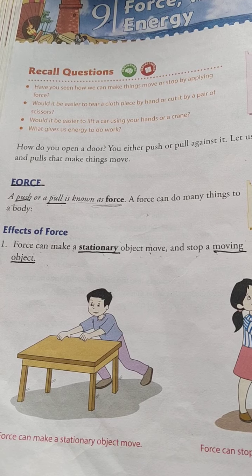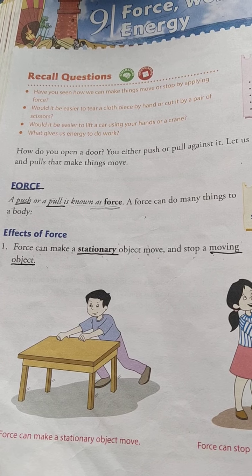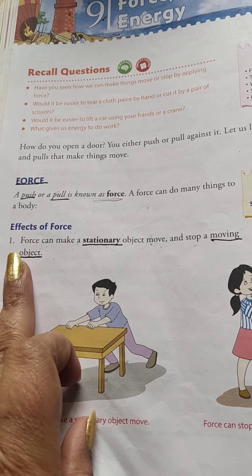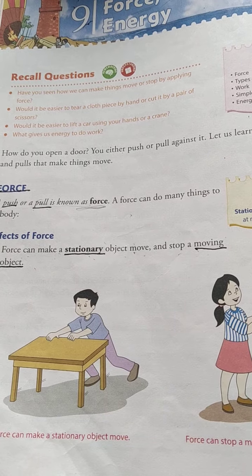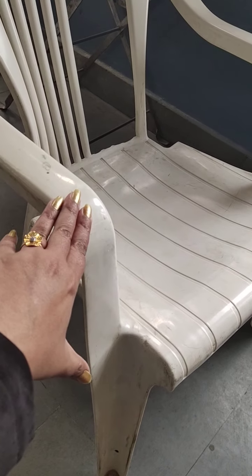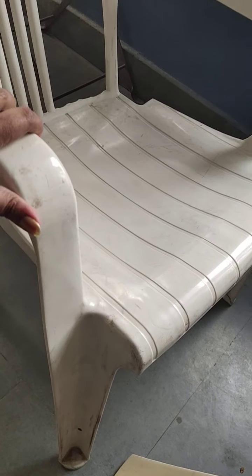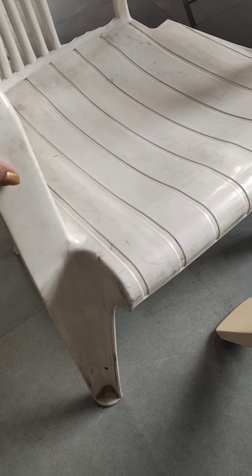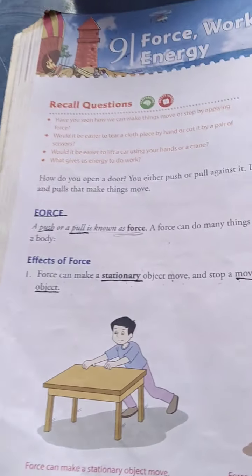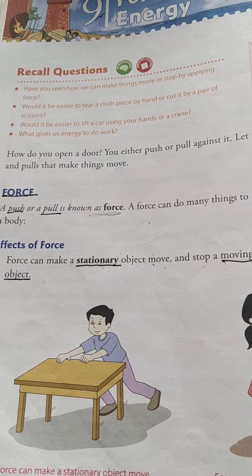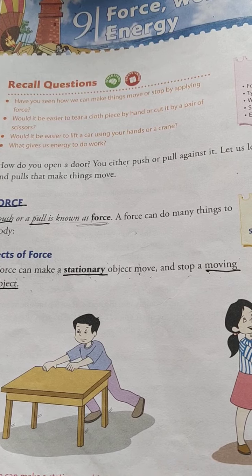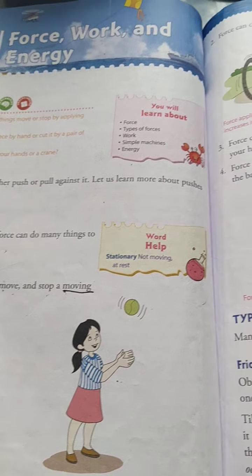This force is very powerful and it can do many things to a body. Let's now discuss what are the effects of force. The first effect is that force can make a stationary object move. Suppose this chair is static and not moving — if I pull it towards me, it comes into a moving position. So a force can make a stationary object move, or it can stop a moving object also, like in football or cricket, you can stop the ball with your force.